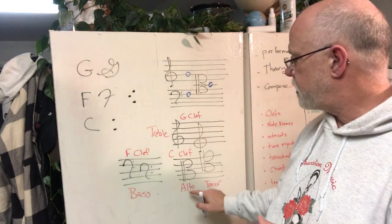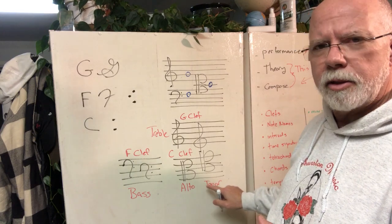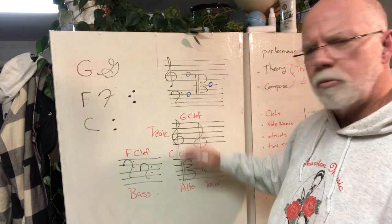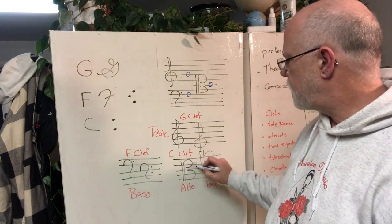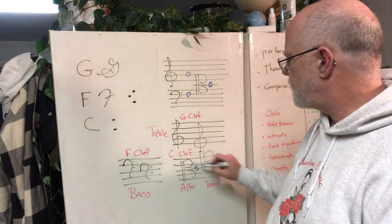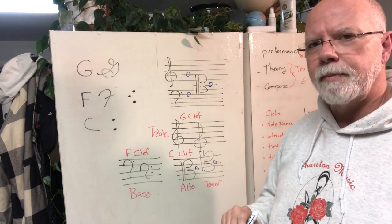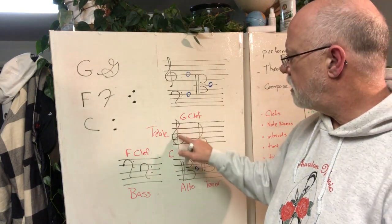This clef, the C clef, has two of them—there's the alto and then there's a tenor. These are the most common; there are others because this is a movable clef. In fact they're all movable, but this is the most movable. Wherever this is, is middle C. Wherever these lines come together, that's middle C.